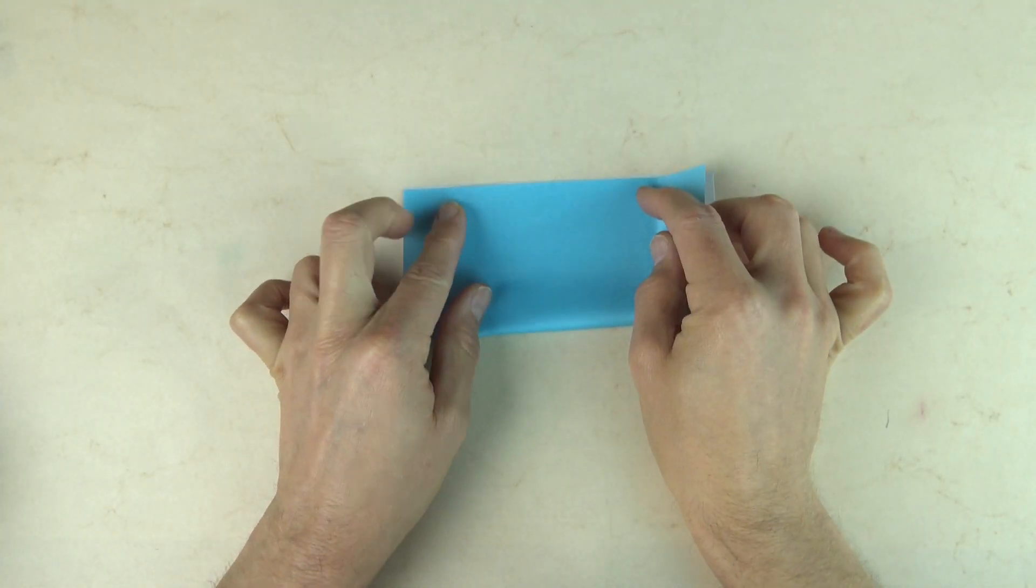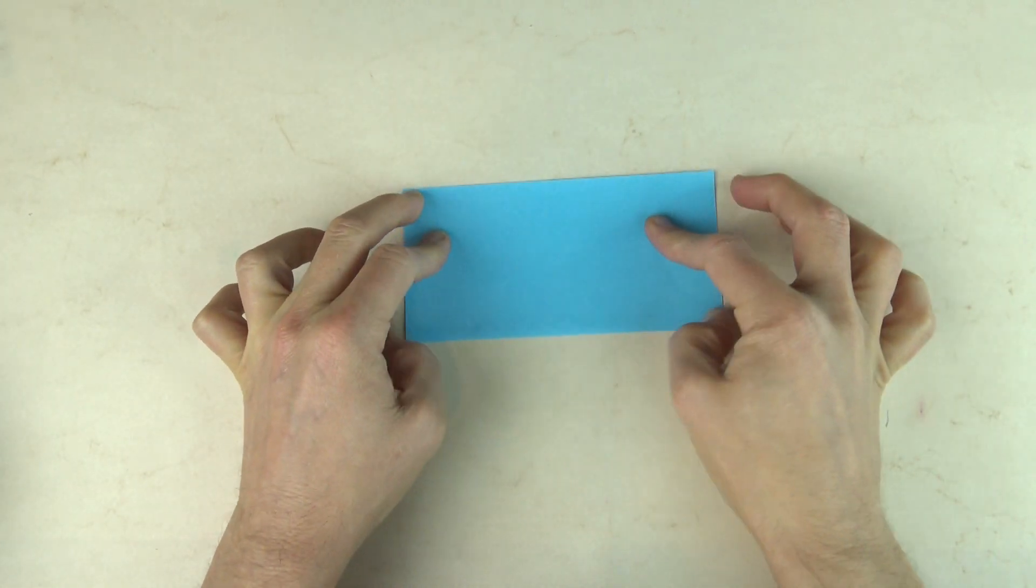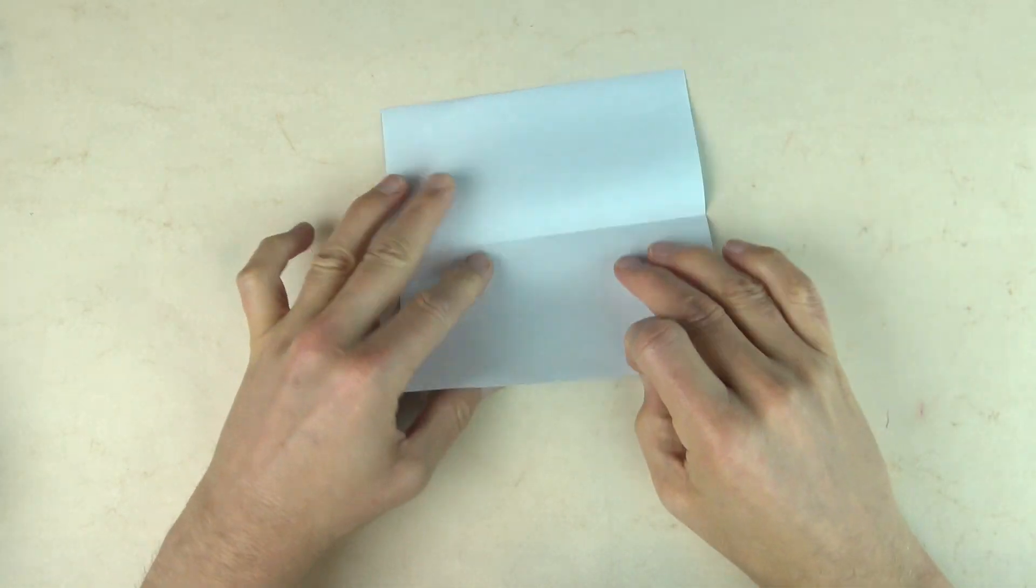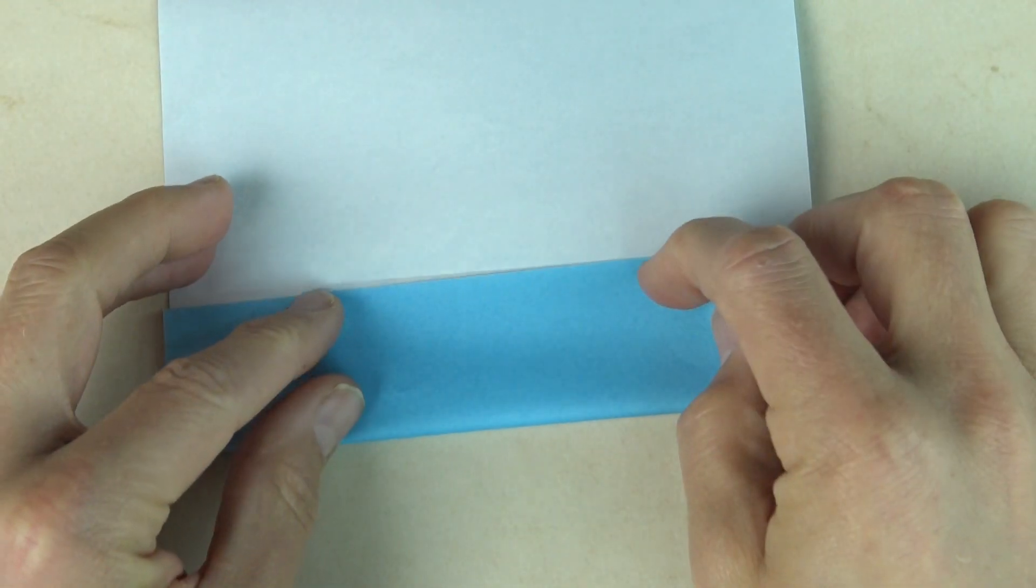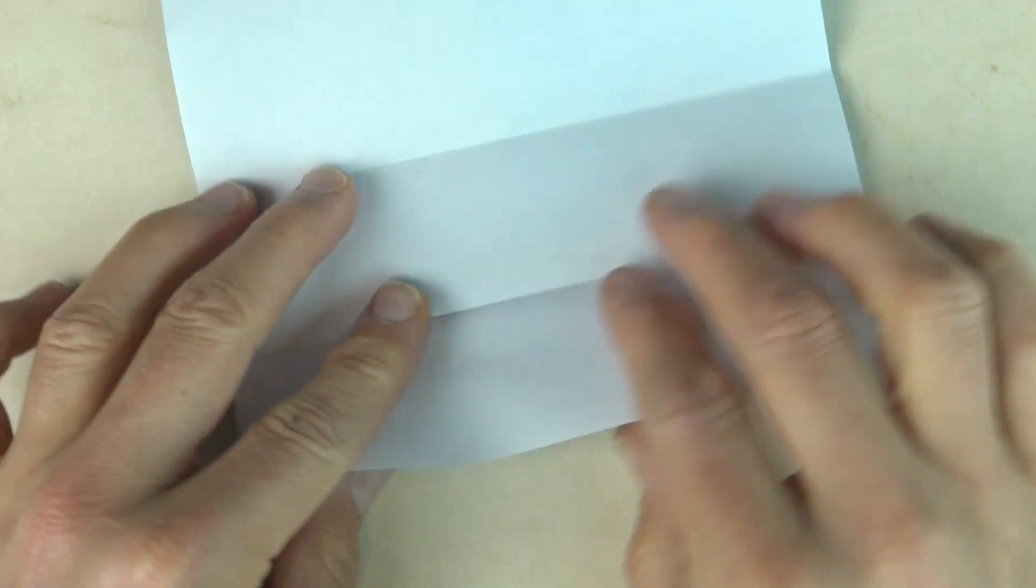We're going to begin with the stencils. So white side up, fold in half. Unfold and fold to the crease.